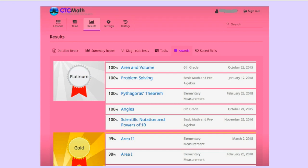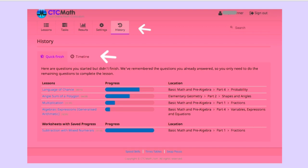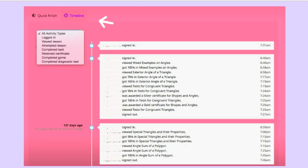Moving on to the history tab up top, quick finish is helpful to your student because it tells her where to pick up since her last session so there's no need to repeat work unnecessarily. Timeline is the other option and that's helpful for mama.